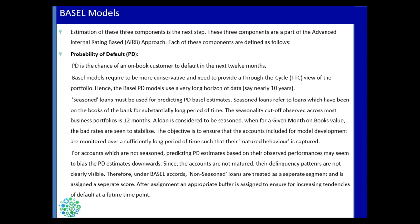Probability of Default is the probability or chance that a customer will default in the next 12 months. For example, one person might have a 50% chance of defaulting in the next 12 months, another might have a 20% chance, another 50%, and another 90%. These are just hypothetical numbers used as examples — in reality customers make their payments on time.